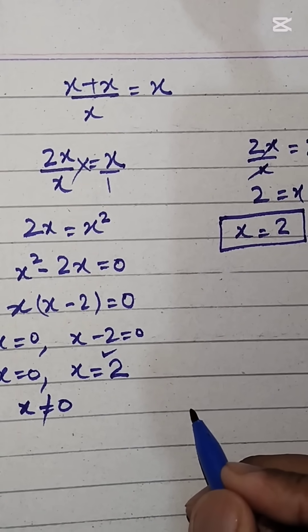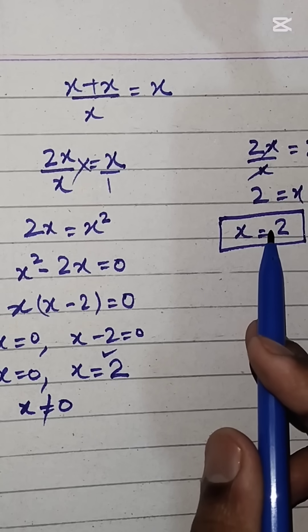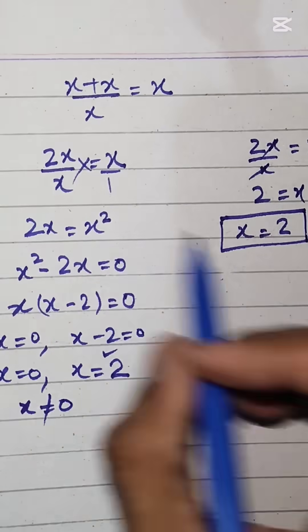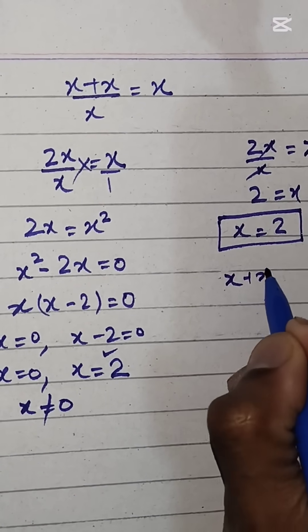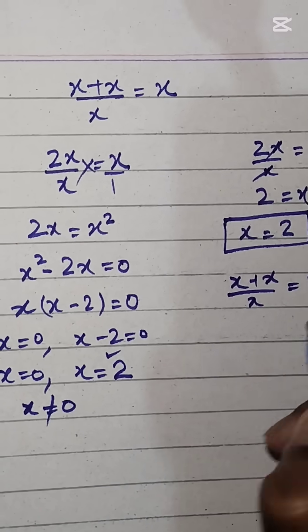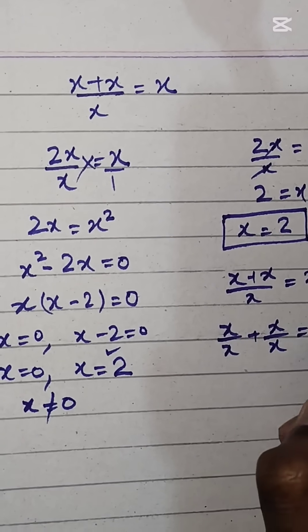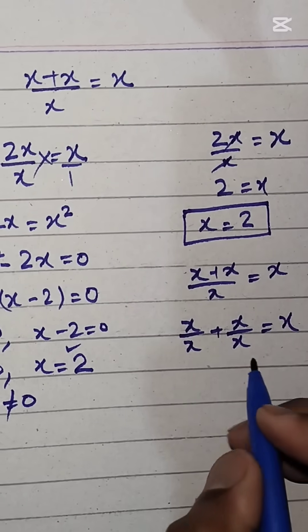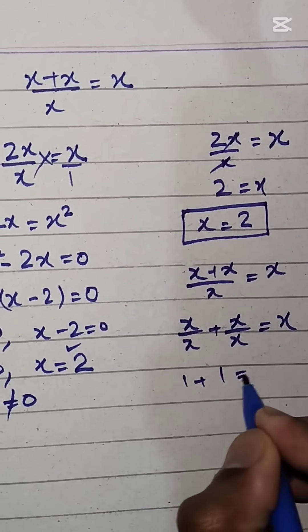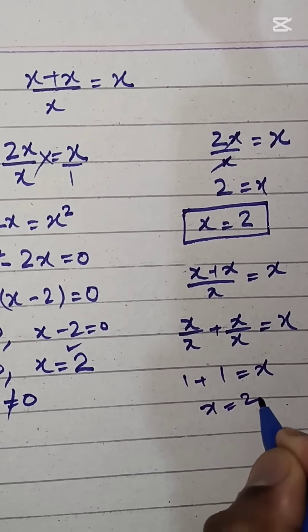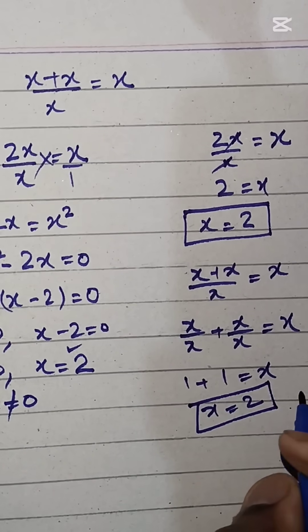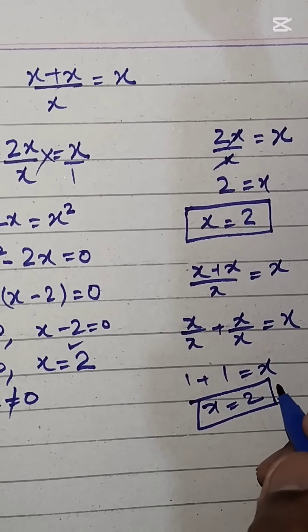Or we can write x plus x over x equals x as x over x plus x over x equals x. Since x over x is 1, we have 1 plus 1 equals x, so x equals 2. This value is true for the given question.